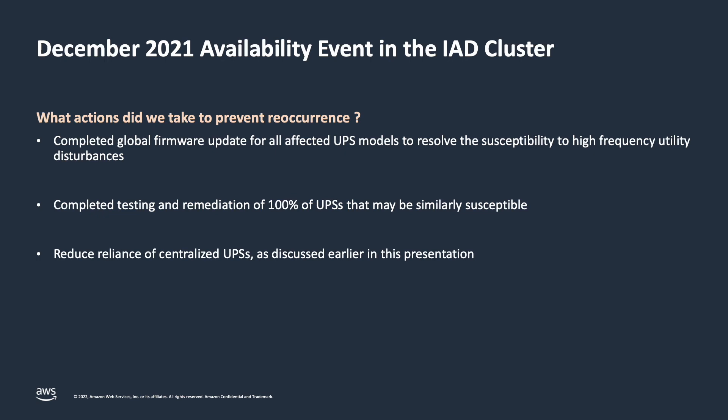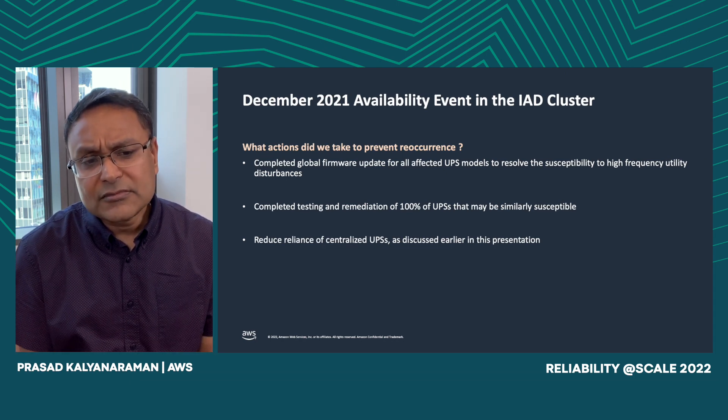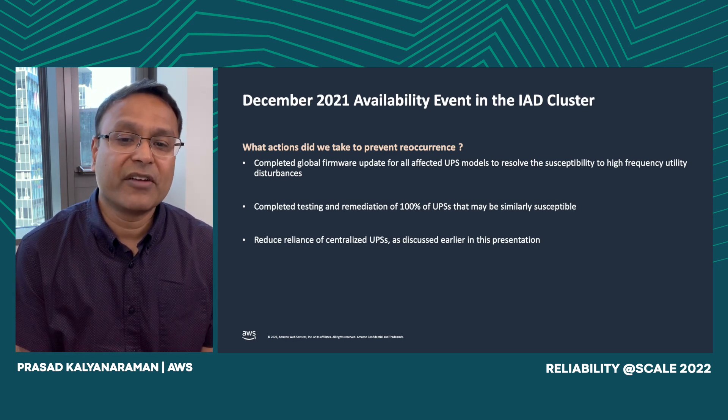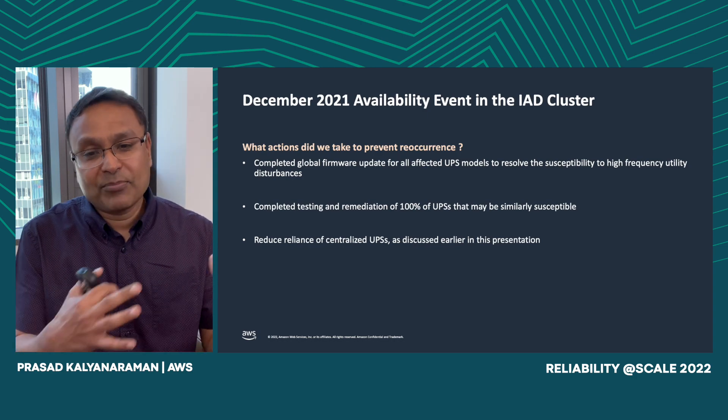We also tested and remediated 100% of the UPSs across the entire fleet that were similarly susceptible. And we've moved away from the centralized UPS design to one with battery backup units on individual servers, which helps with blast radius. To recap our evolution: we started with N plus C, realized maintenance reduced our redundancy so we moved to N plus 2C, then eliminated large-blast-radius centralized UPSs to ensure redundancy across the entire lineup. Then we built self-healing systems so that when excursions happen we can automatically heal, and we automated that process.